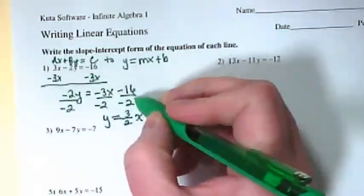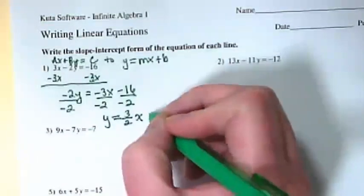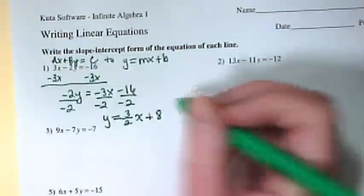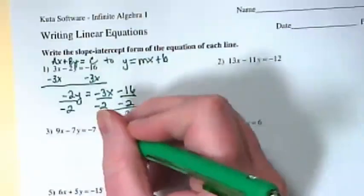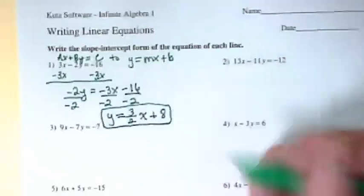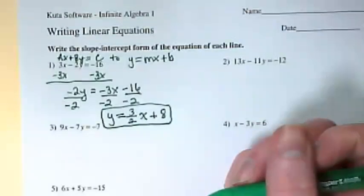And negative 16 divided by negative 2 gives us 8. And that's our answer.